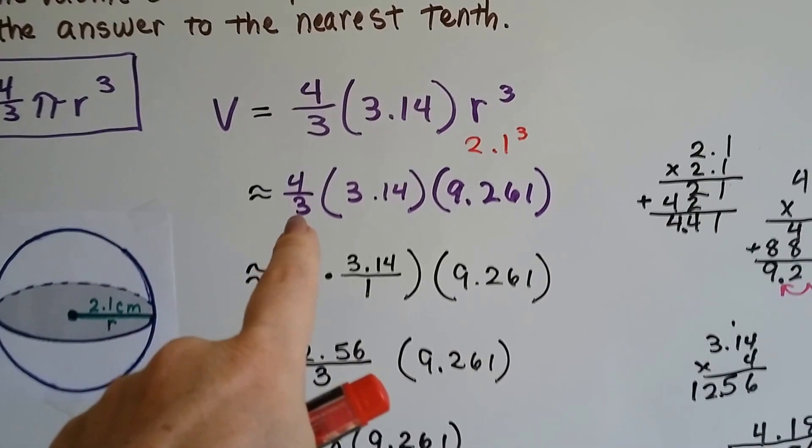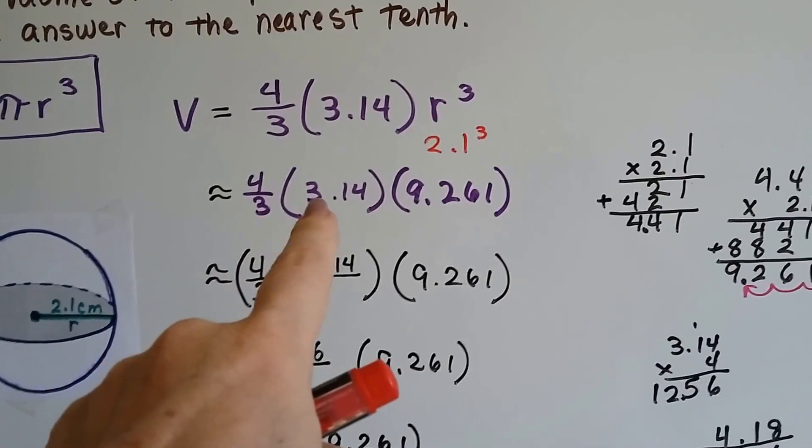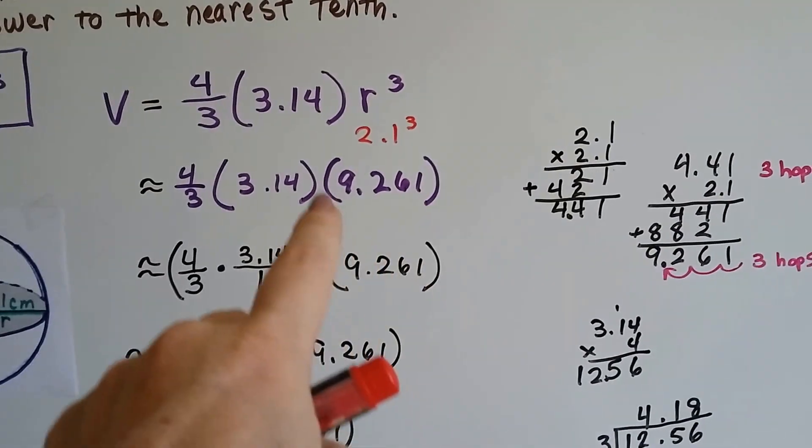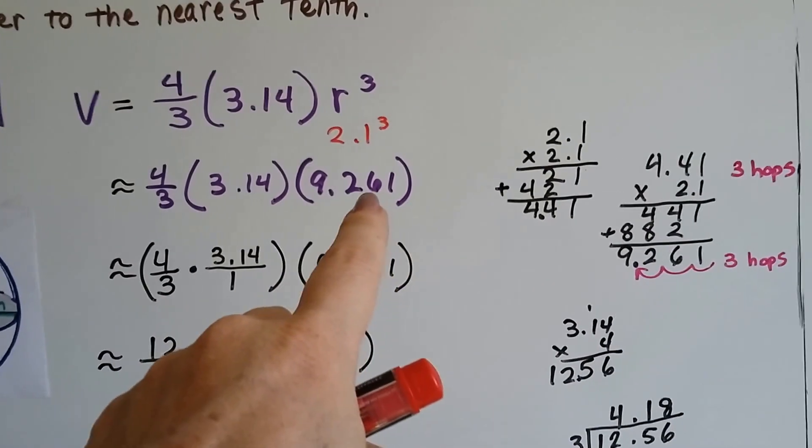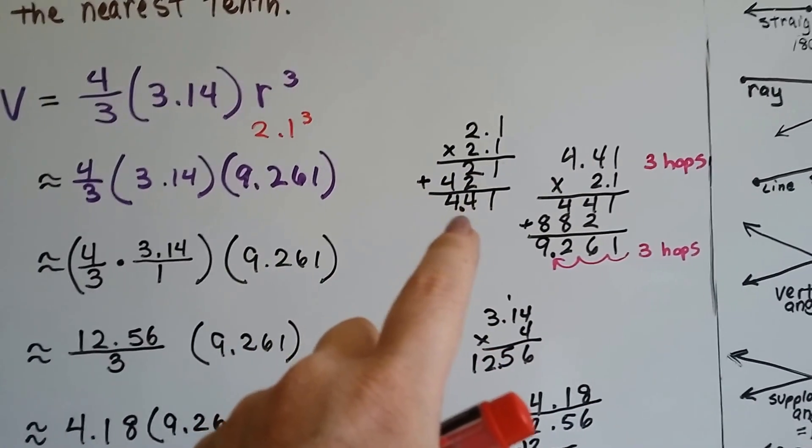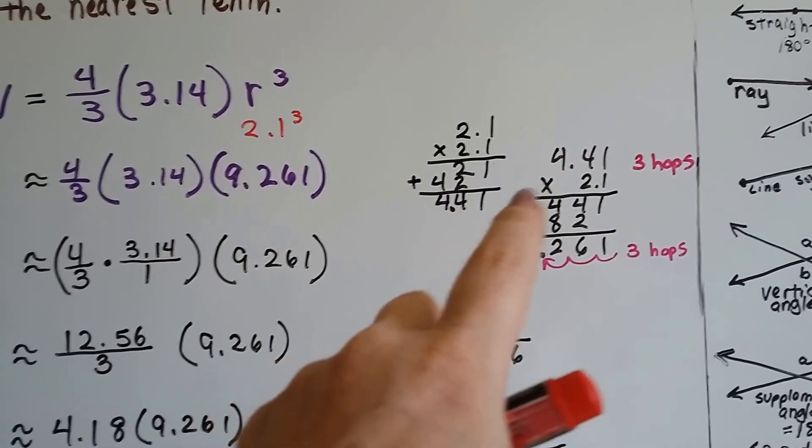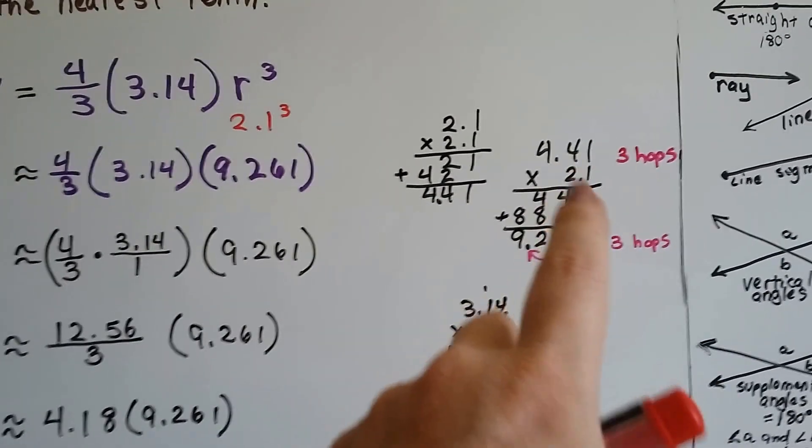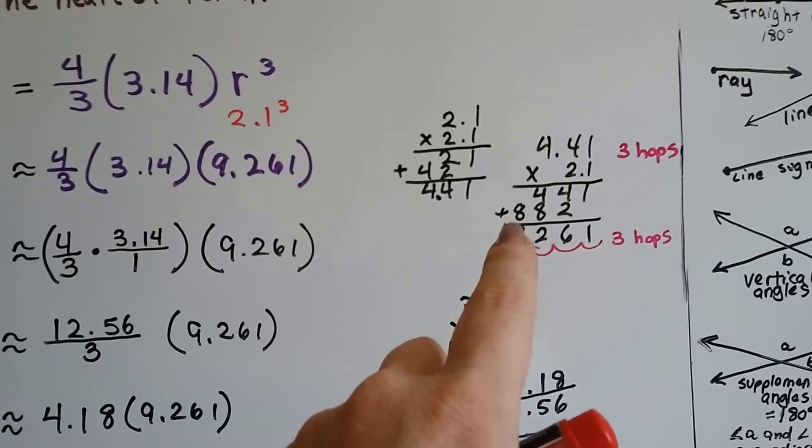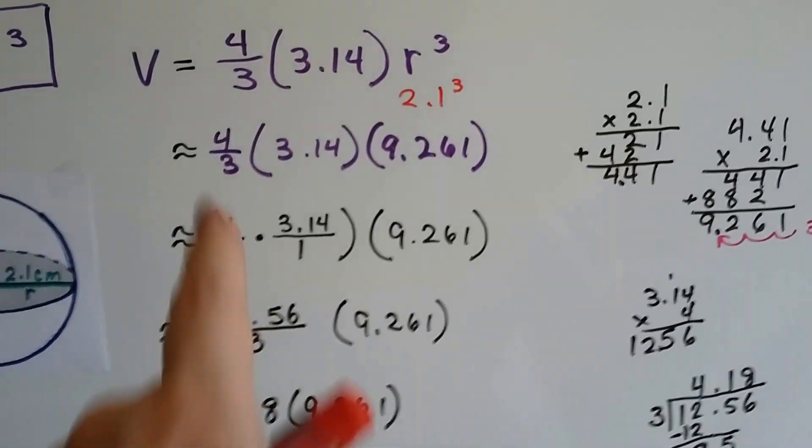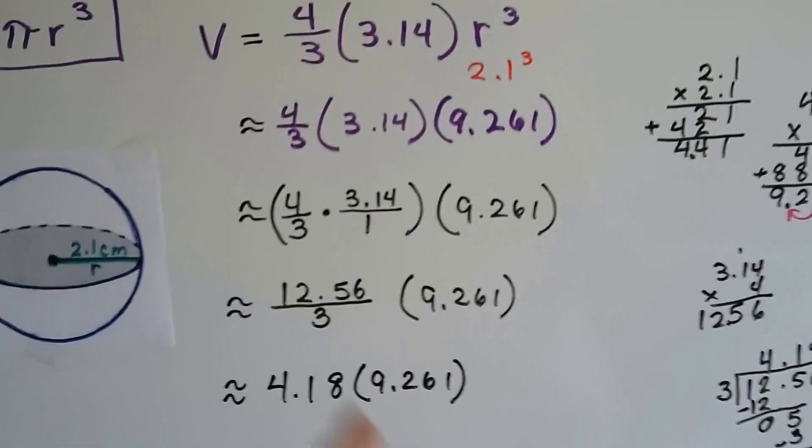Well, that means we've got four-thirds times 3.14 times 9.261, 9 and 261 thousandths. I multiplied 2.1 by 2.1, and I got 4.41, and then I had to multiply that by 2.1 to get the cubed, and there were three hops in the equation. I put three hops in the product, and I got 9.261. So, now we need to multiply these together.